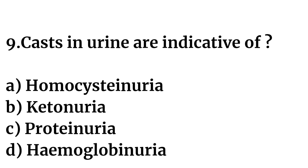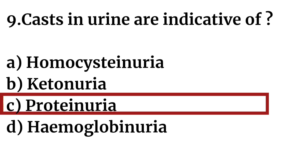Question number nine: Casts in urine are indicative of — Option A: homocysteinuria. Option B: ketonuria. Option C: proteinuria. Option D: hemoglobinuria. The right answer is Option C: proteinuria. Casts in urine are indicative of proteinuria.